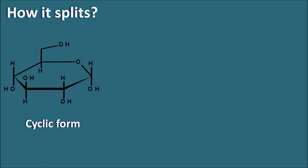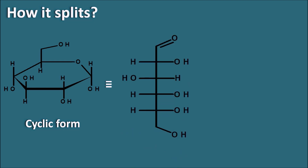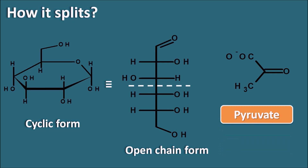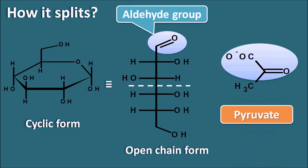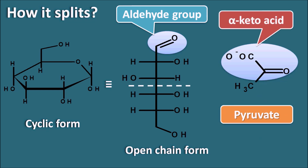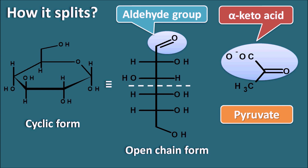Now let us see how glucose is split. Glucose exists in cyclic form, which can also be represented in an open-chain form. When this open chain is split into two equal halves, it gives pyruvate. Comparing the half molecule of glucose with pyruvate, in glucose one half has an aldehyde functional group, whereas pyruvate has a carboxylic acid with an alpha-keto group — that is, an alpha-keto acid group.